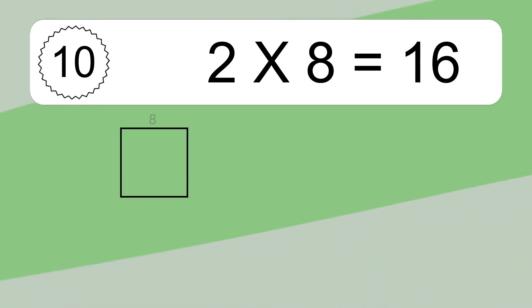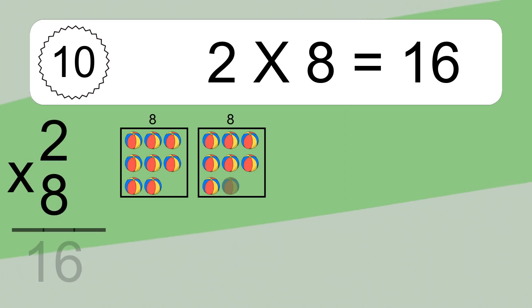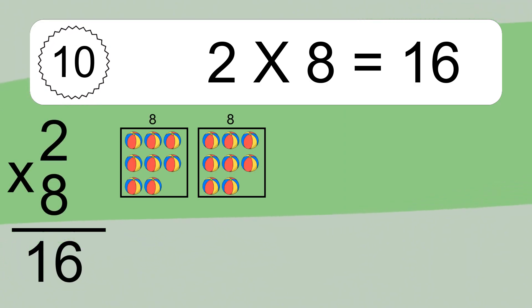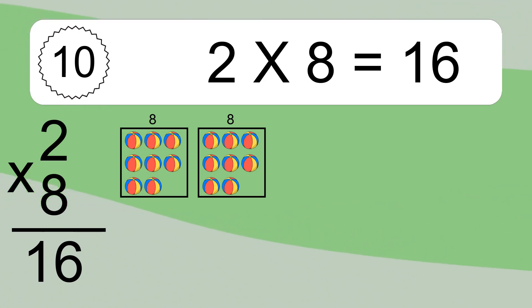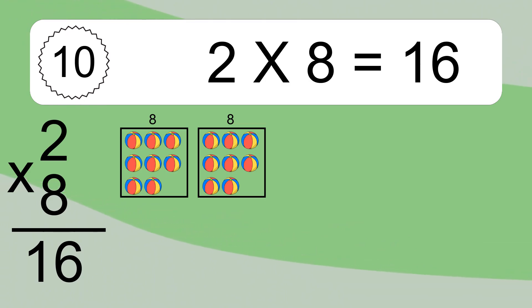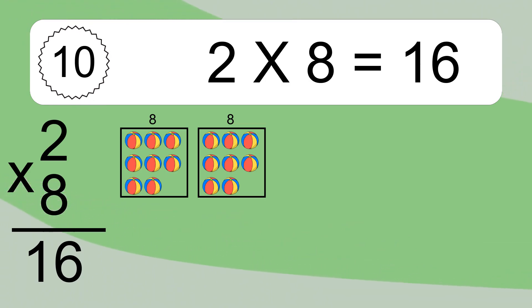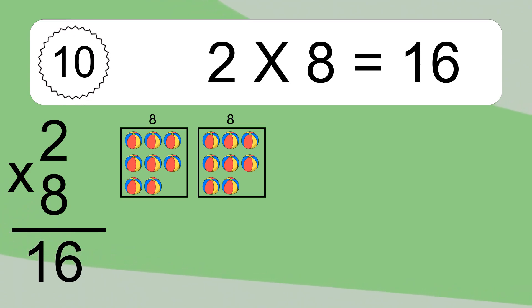2 times 8 equals what? 2 times 8 equals 16.